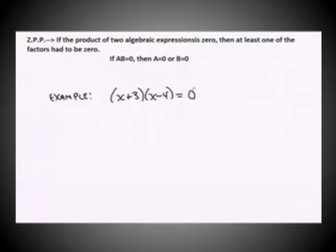I have two factors being multiplied equaling zero. I have a factor of x plus three, and I have a factor of x minus four.